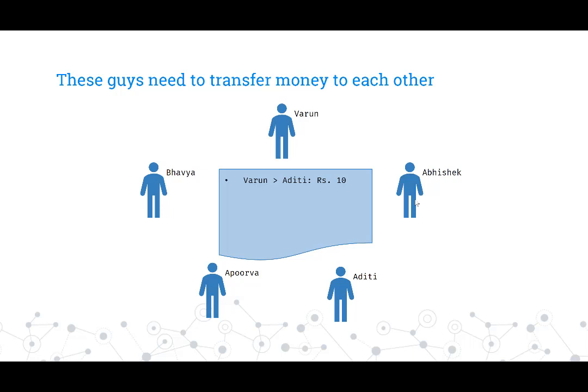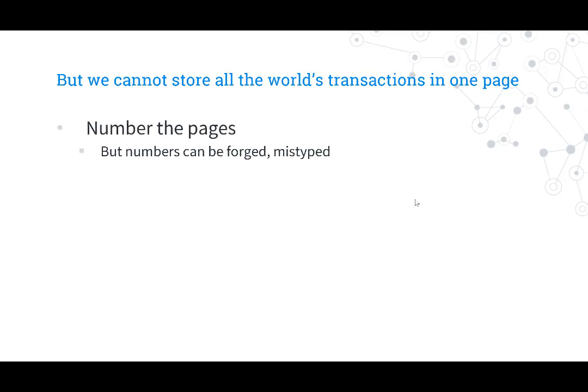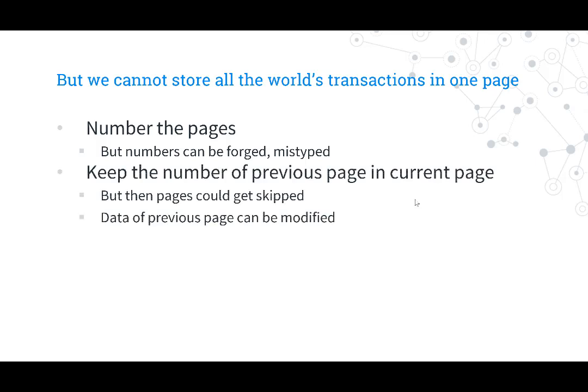A key assumption many cryptocurrencies make is that because people already possess some fiat currencies, everybody's net worth is already established. Blockchain doesn't try to solve the problem of ownership — it straight away tries to solve the problem of transactions. So we write down transactions one after the other. At some point we can't fit all transactions on a single page, so we number each page — but numbers can be forged or mistyped, and data inside each page can also be changed.